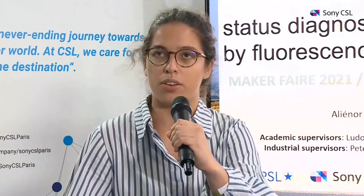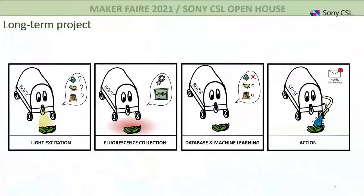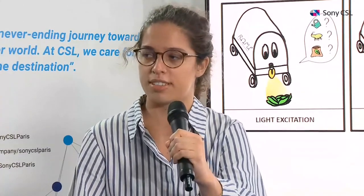The project is linked to the robot development in the lab. The long-term objective is to put the device on the robot: the robot sends light onto plants, the plants emit fluorescence, and by collecting this information the robot compares it to a database to perform a status analysis — for example, saying this plant needs water, is under pest attack, or needs fertilizer — and may act directly or inform the farmer.